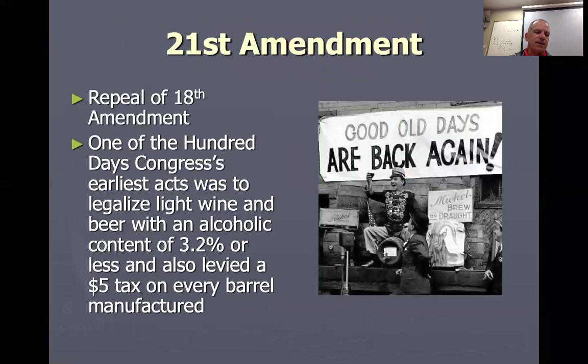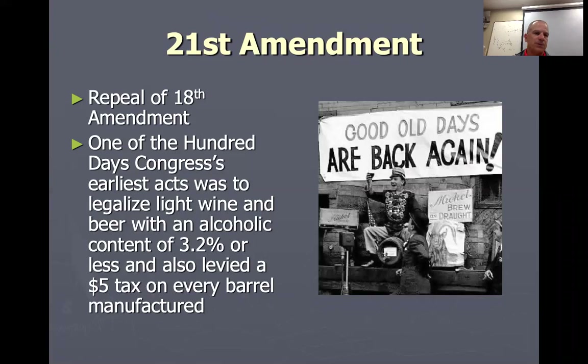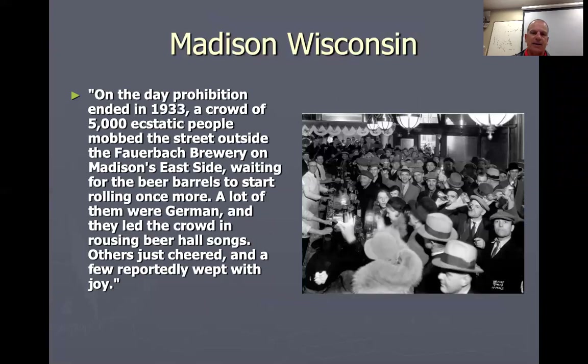The 21st Amendment was passed, repealing the 18th Amendment and prohibition. Roosevelt was in favor of it — people were drinking anyway, so they might as well make it legal, open up bars to stimulate the economy, and tax alcohol so the government would get that revenue. It was a win-win: stimulating the economy through new businesses and taxing the whiskey. Here's a crowd in Madison, Wisconsin very excited because the barrels started rolling again — they were going to start producing beer.